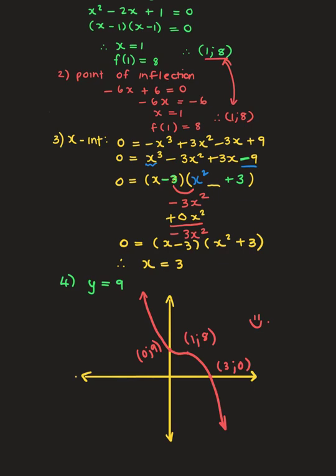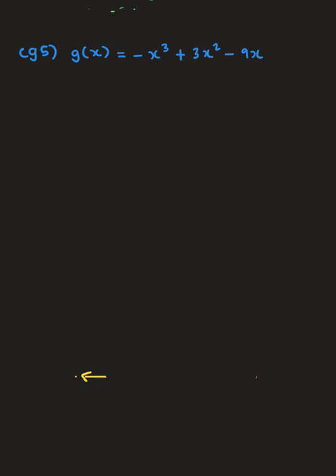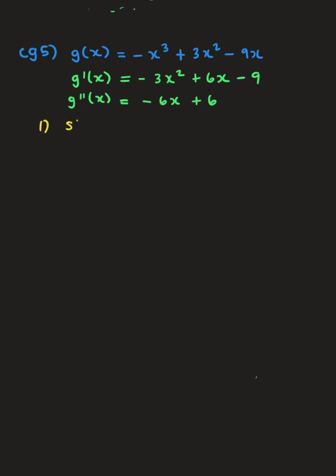One last example — example five. This is a really interesting graph. 'a' is negative, so the graph will start by decreasing. Finding the first and second derivatives: first derivative is -3x² + 6x - 9 (divided by -3: x² - 2x + 3); second derivative is -6x + 6.